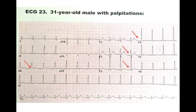The first thing you want to do with every EKG is look at the rate. You look at lead 2 and go 300, 150, 100, 75, then 60. So the ventricular rate is around 75 — not tachycardic or bradycardic.